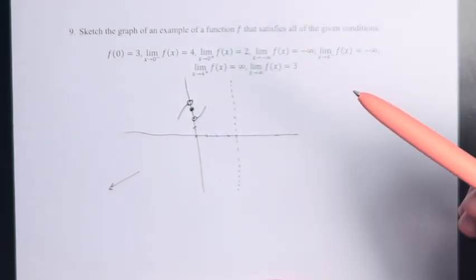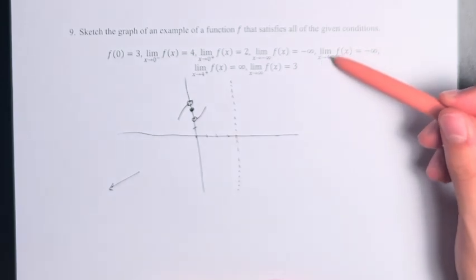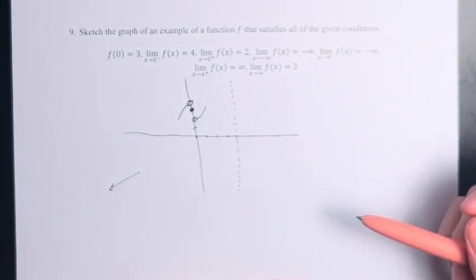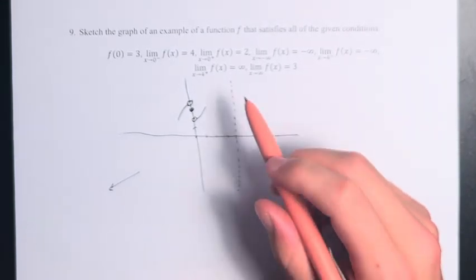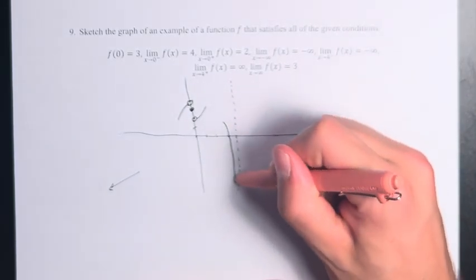As x is approaching 4 from the left, the value of the function is going off to negative infinity. So from values less than 4, the value of the function is getting smaller and smaller.